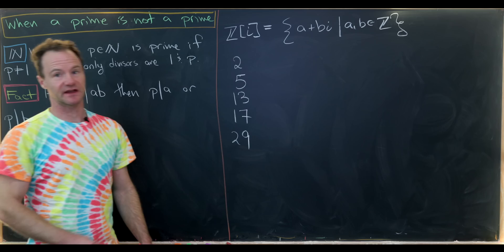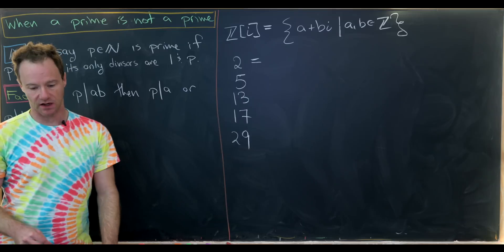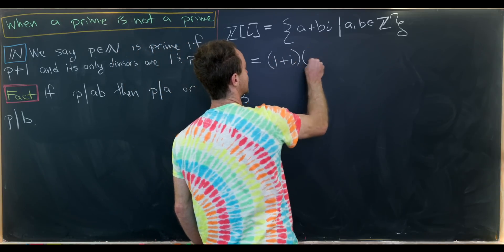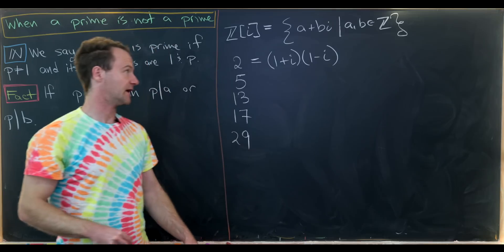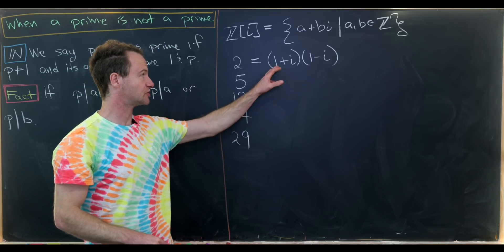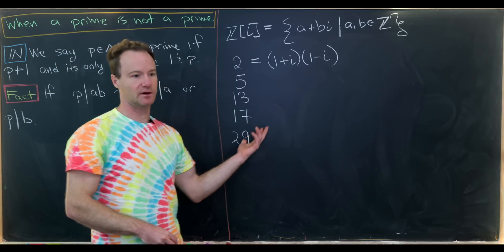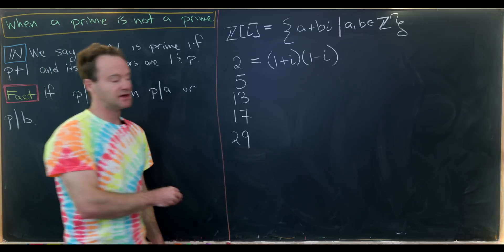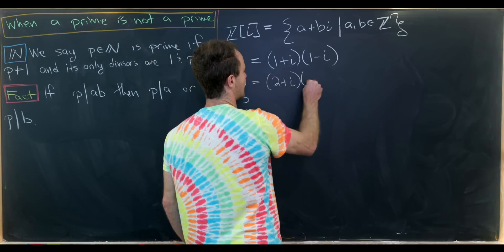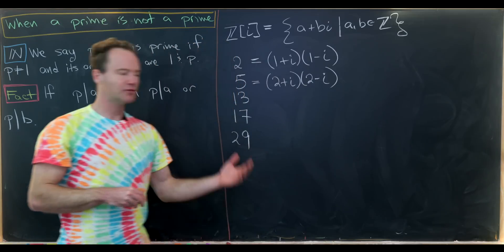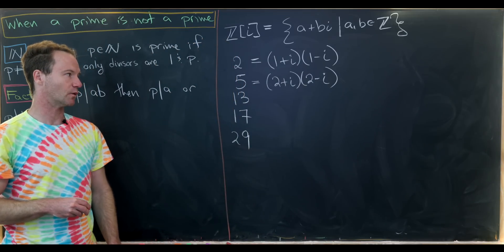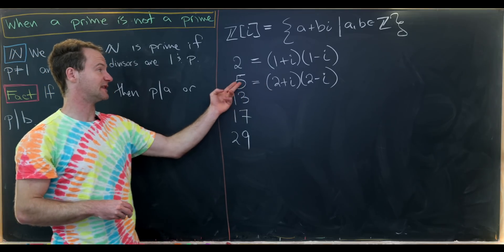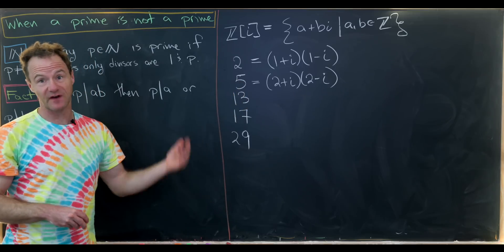We can factor these over the Gaussian integers using a trick involving complex conjugates. The number 2 can be written as (1 + i)(1 − i), because that's like a difference of squares: 1 squared minus i squared equals 1 plus 1, which is 2. So 2 is not prime within the Gaussian integers. Similarly, 5 can be written as (2 + i)(2 − i).